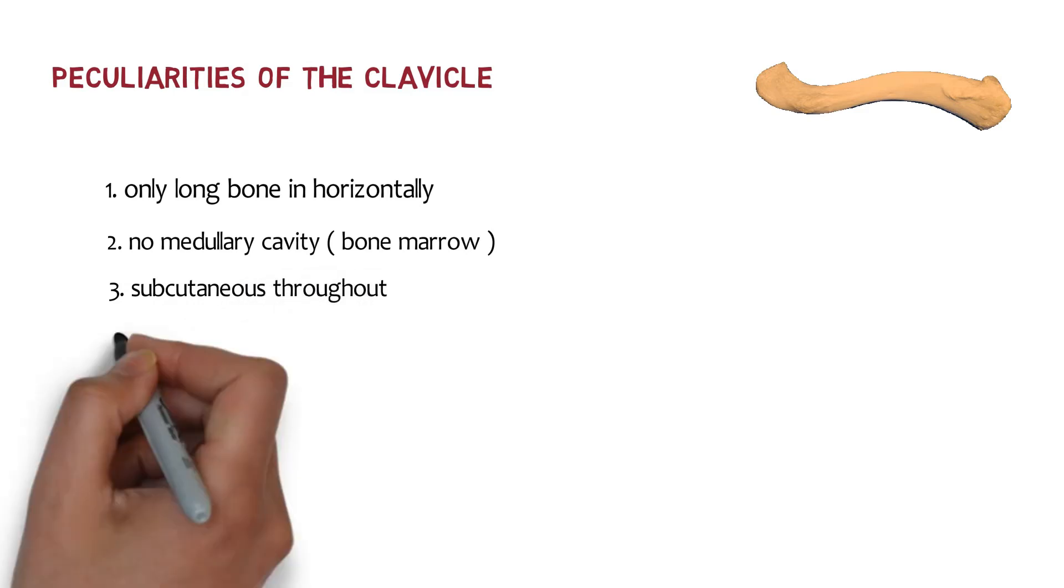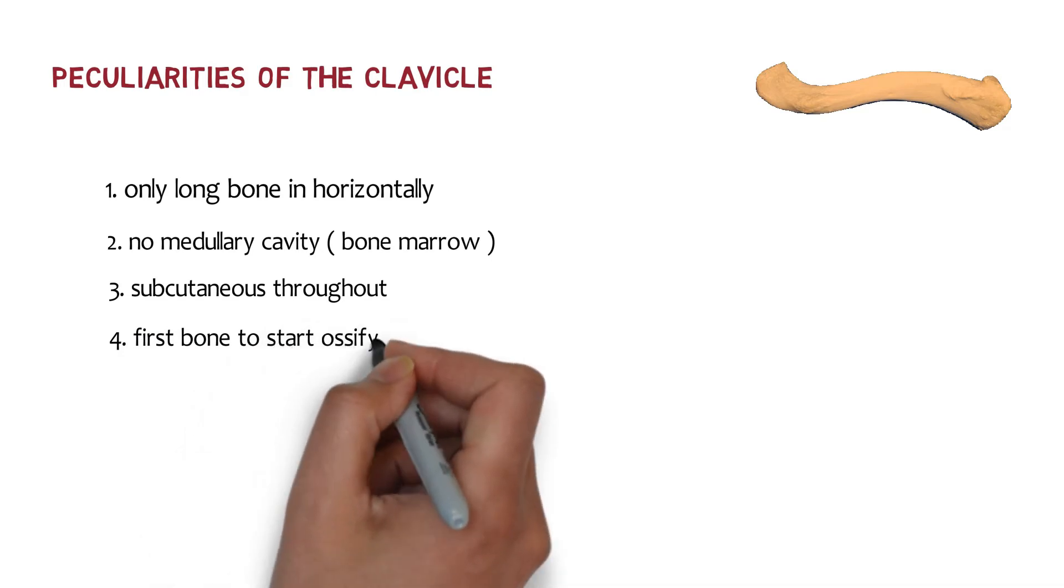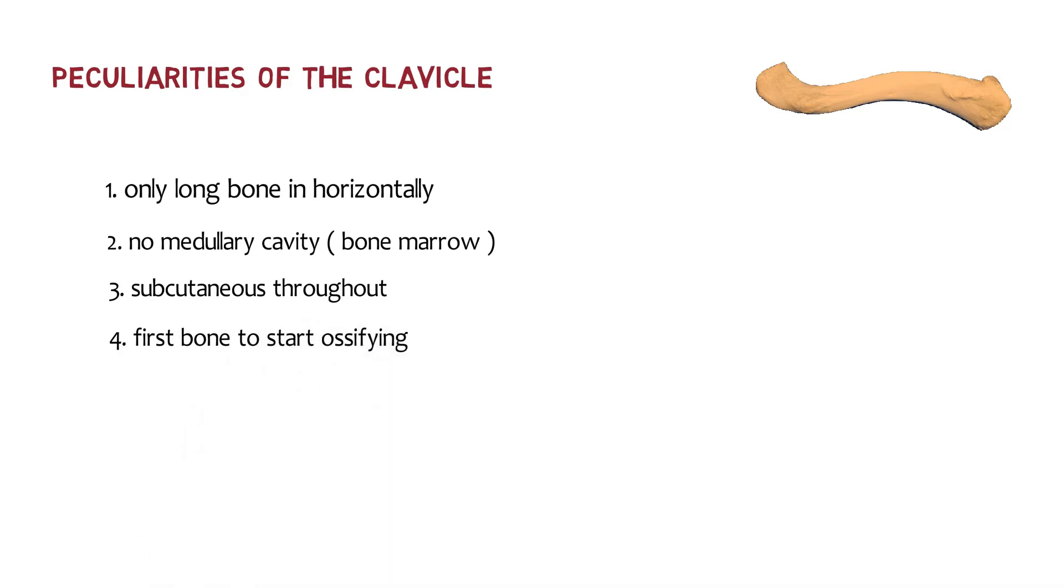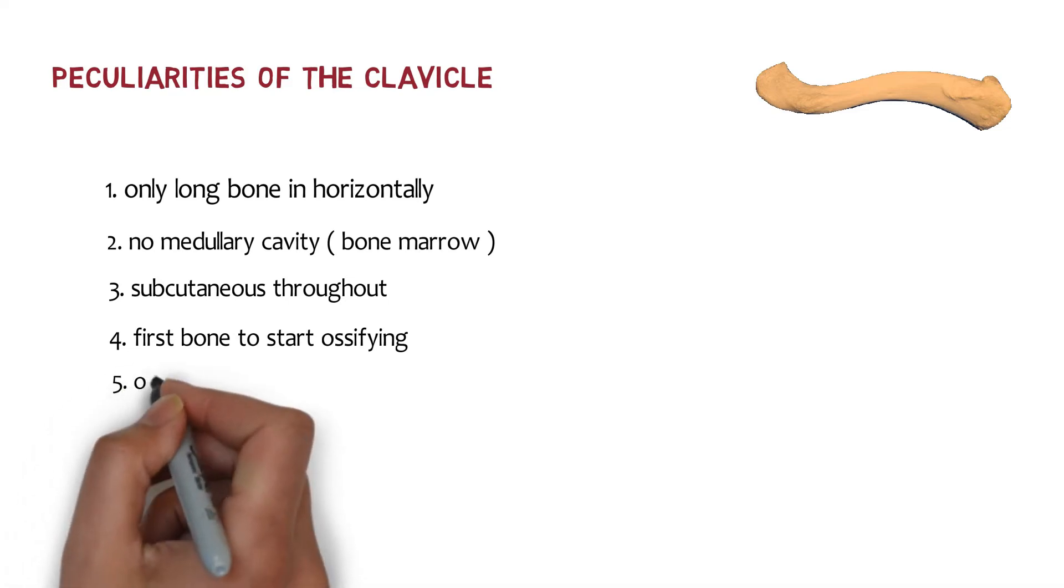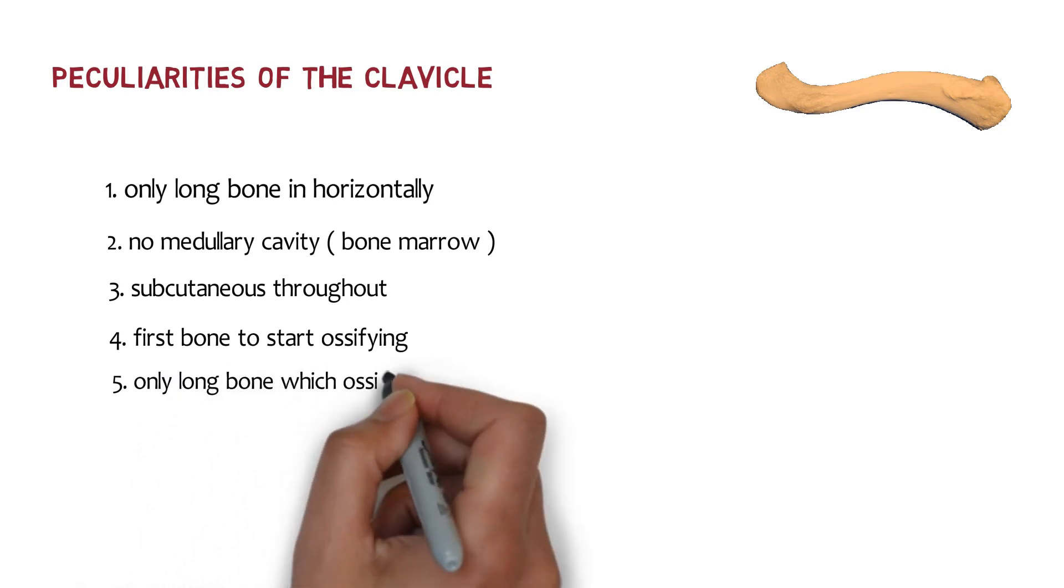The next one is it is the first bone to start ossifying somewhere between the fifth and sixth week of intrauterine life and the very last bone to finish its ossification at about 25 years. The fifth one is it is the only long bone which ossifies in membrane other than its medial end.